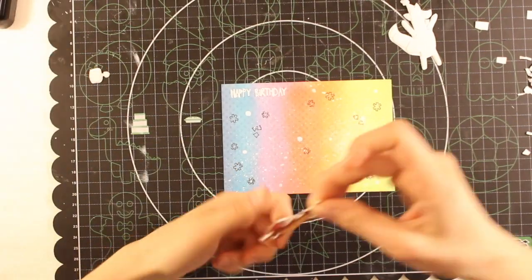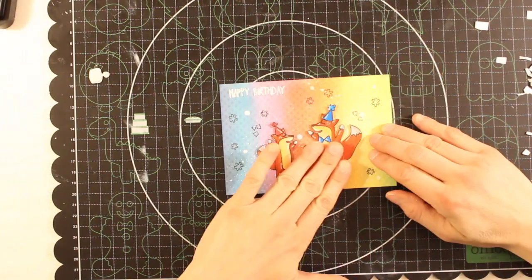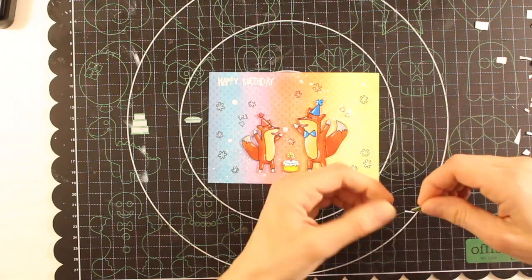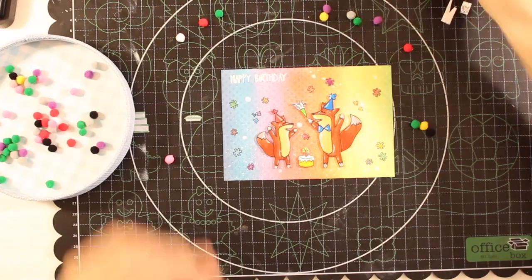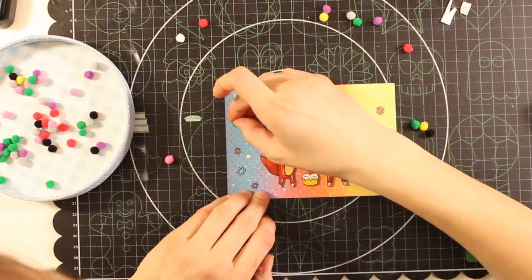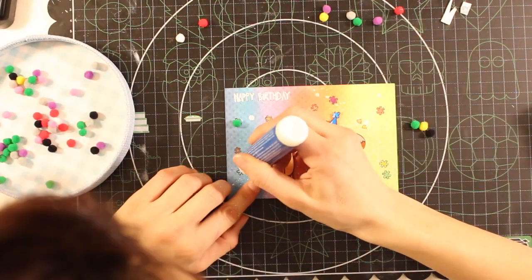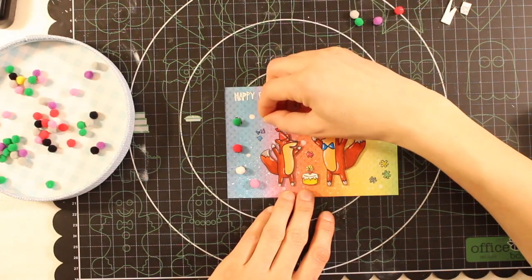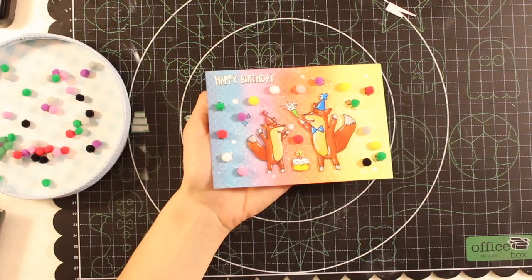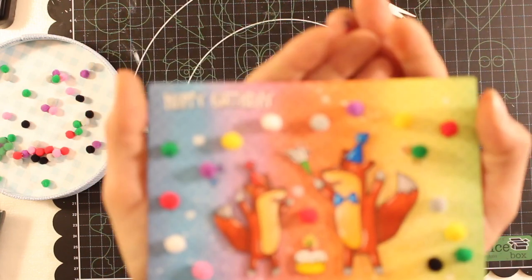Now it's time to glue down the images with adhesive foam to give them dimension. And for this card, I decided to have even more dimension to make it more whimsical by adding a few colorful pompoms, which I'm actually gluing directly on the confetti, which I stamped before. And this is it. I think it turned out very nice and whimsical and beautiful.